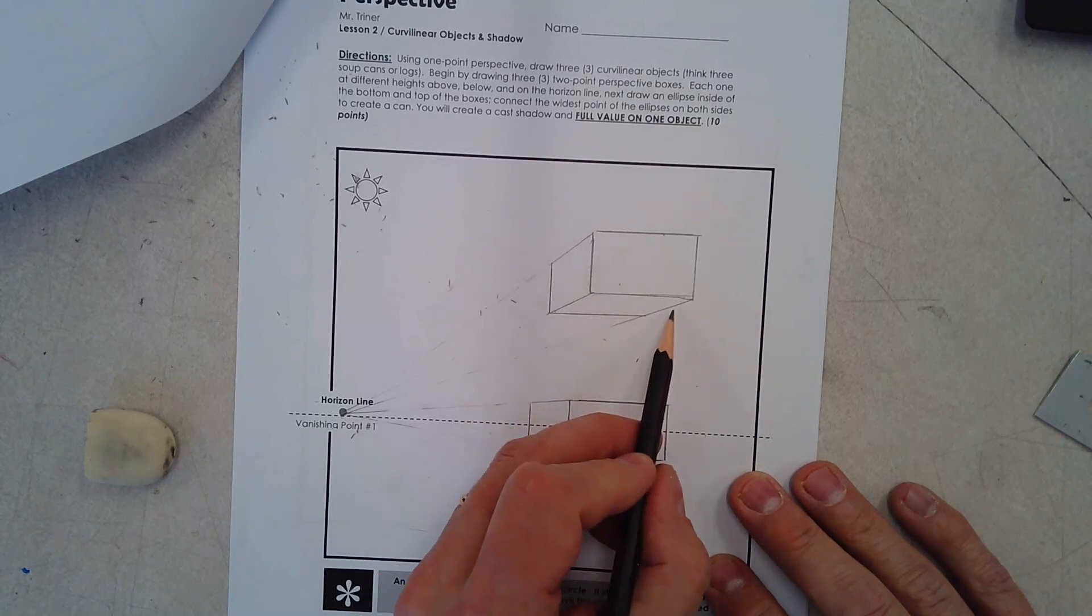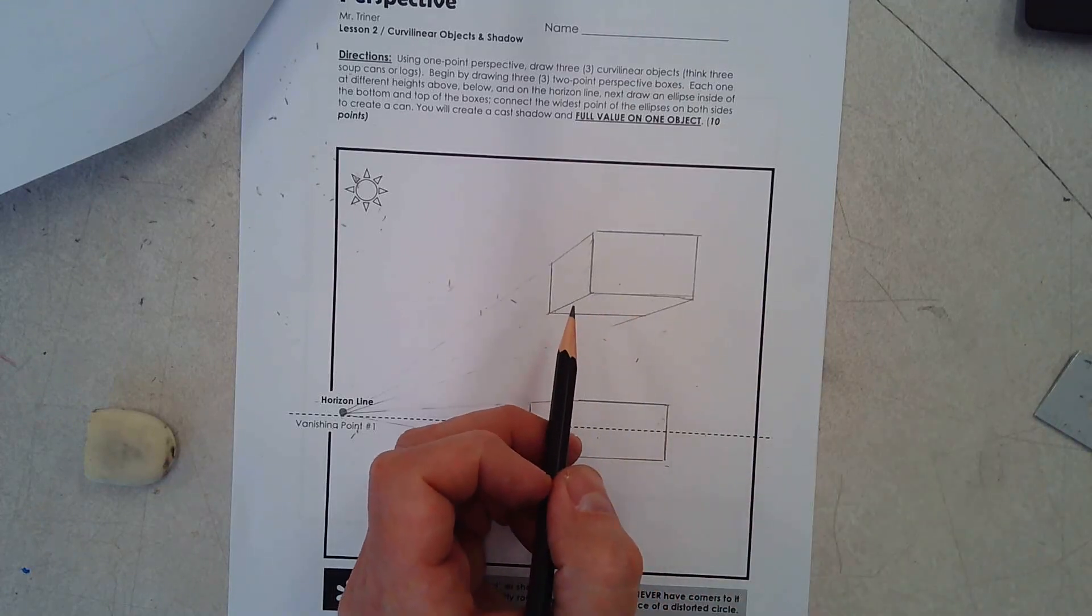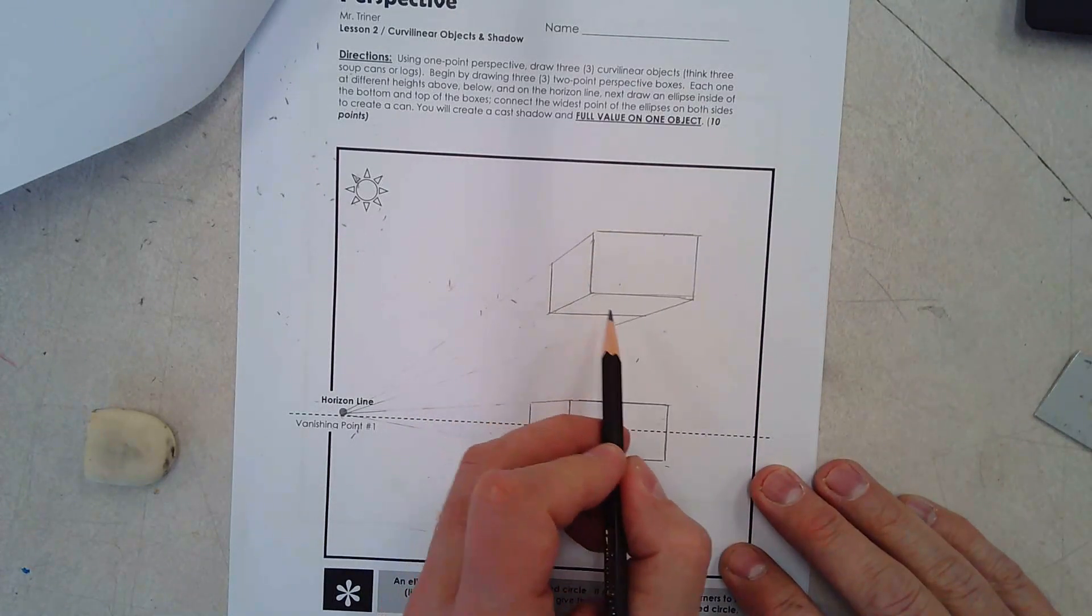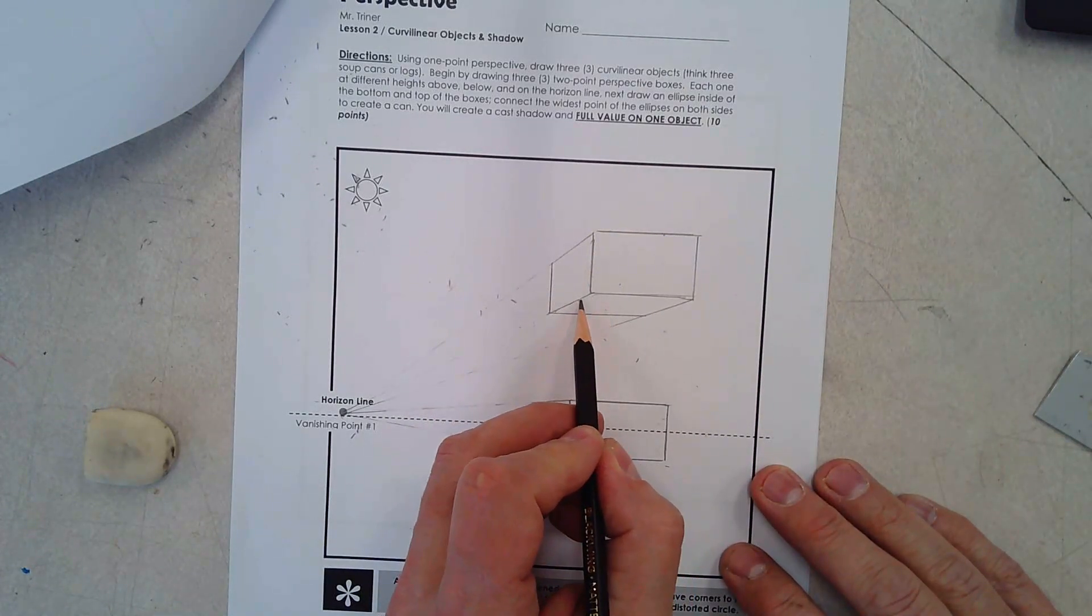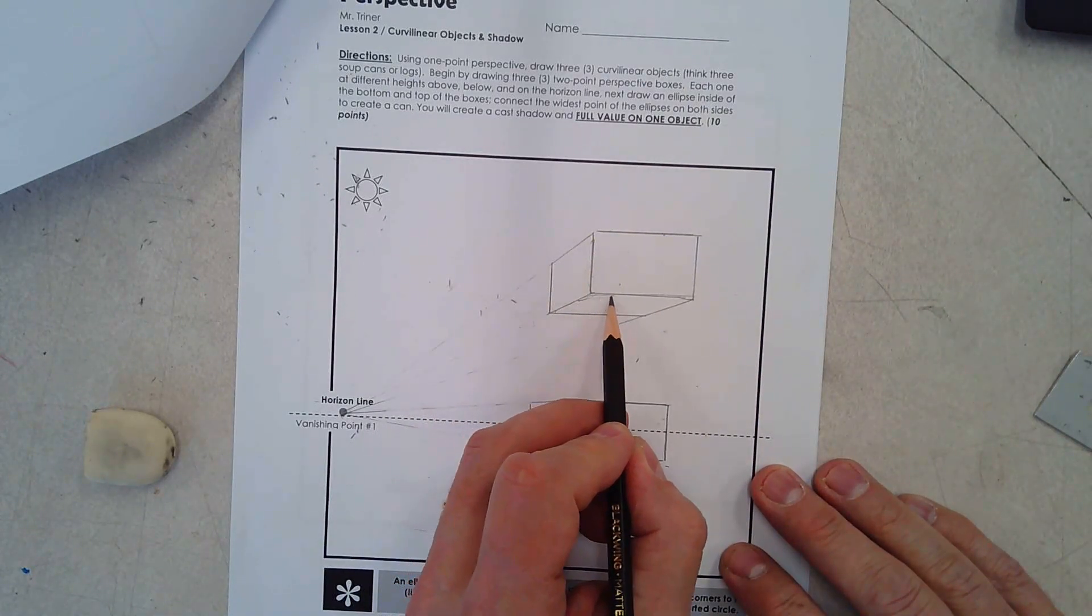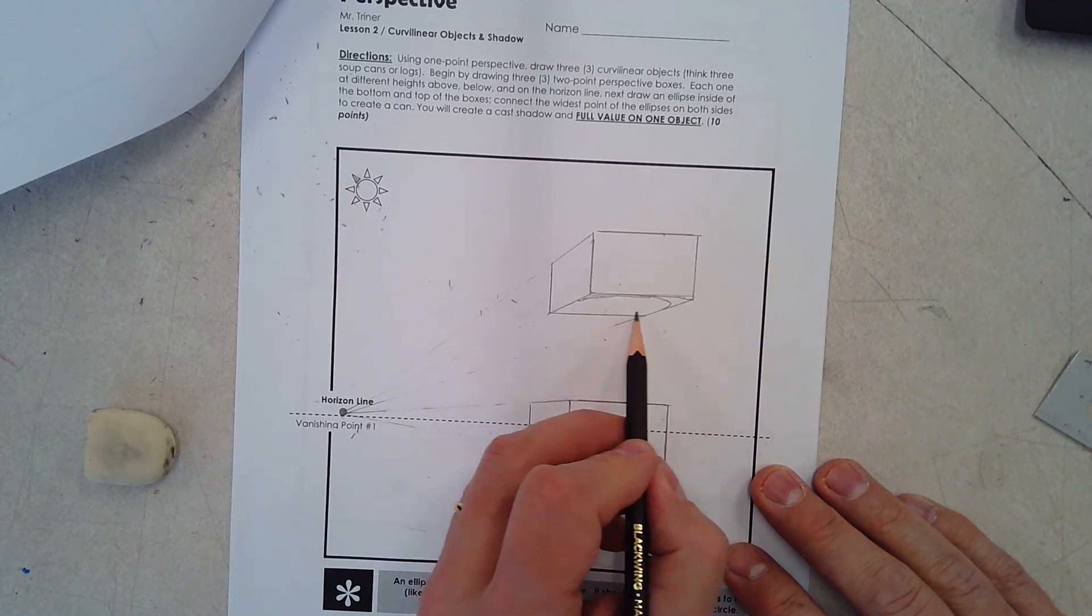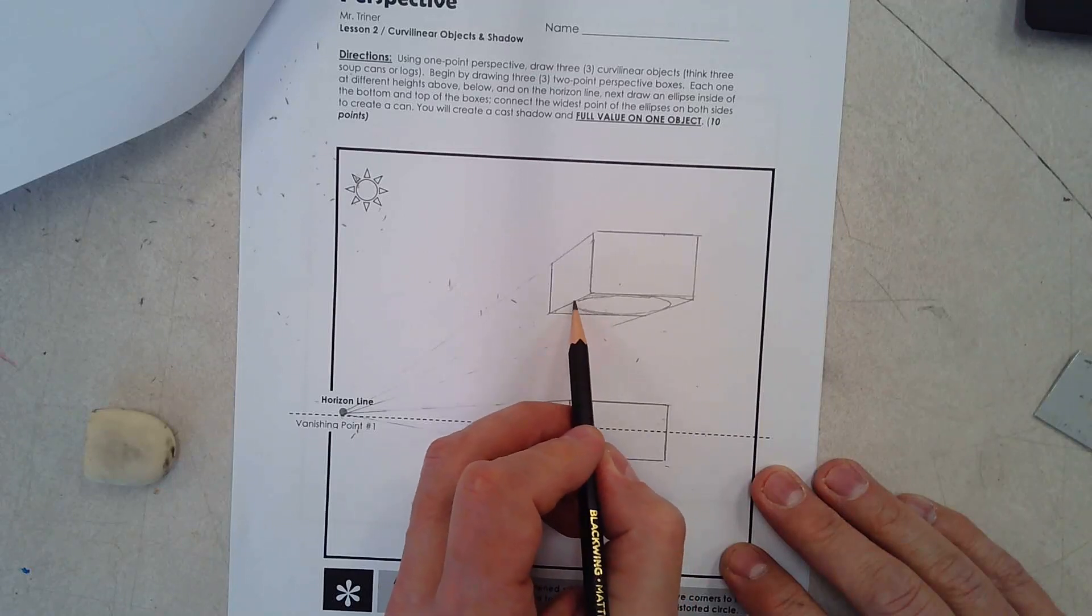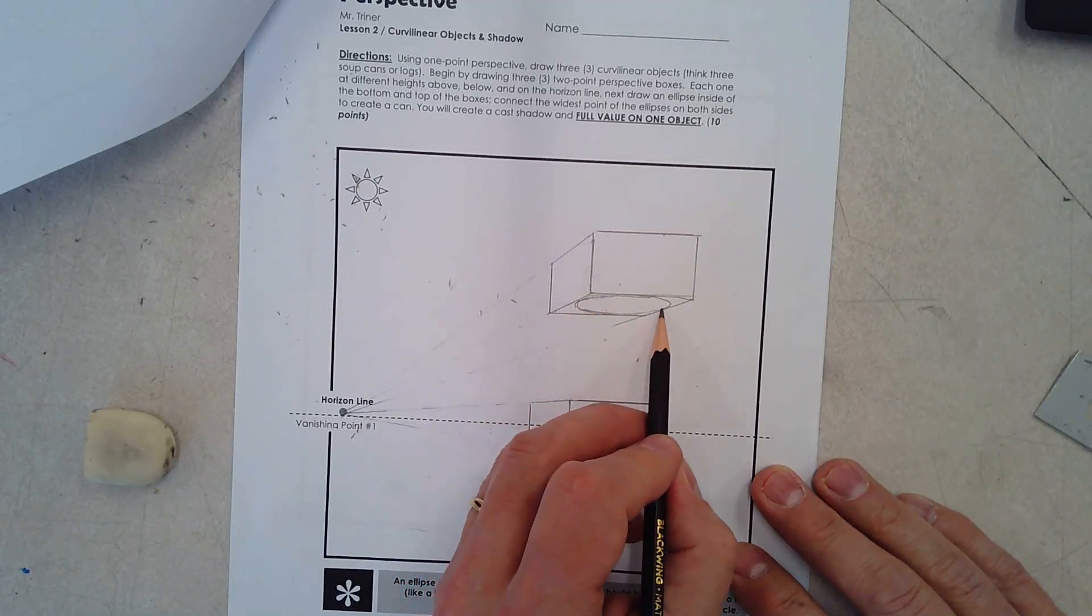So now I need to establish what would this object look like so that it could look curved. So I'm going to take the bottom of this box and start drawing an ellipse. If you look on this worksheet and in class, we talked about an ellipse is nothing more than a distorted or squished circle, if you want to call it in an elementary way.